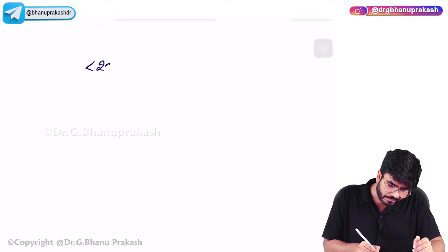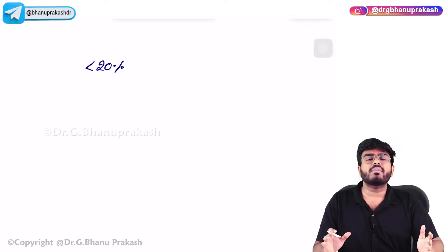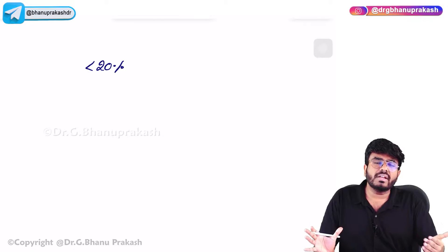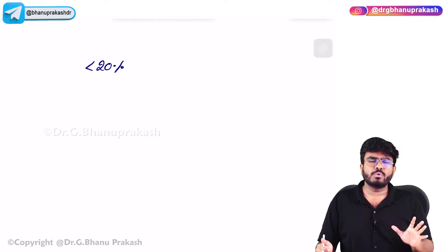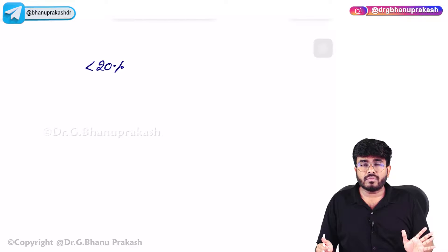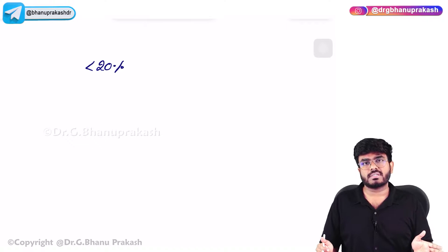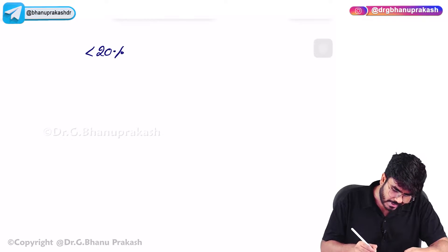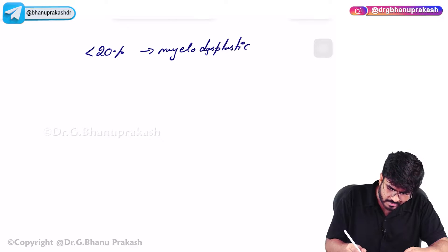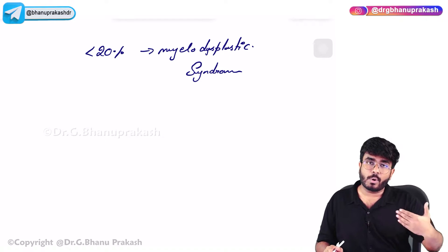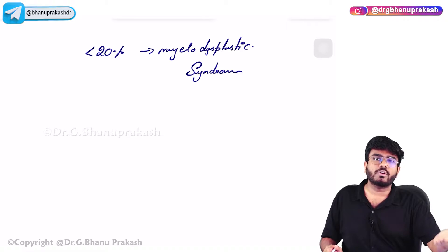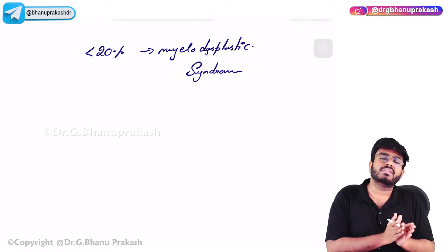One more point: if a patient has neoplastic proliferation with blasts less than 20%, that is not acute leukemia. Normally blasts are around 3 to 5%. If you have blasts less than 20%, then you call them myelodysplastic syndromes - these are not acute leukemias, but they can turn into acute leukemias.